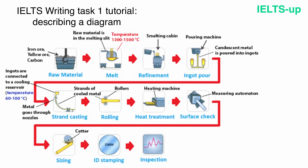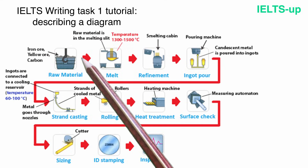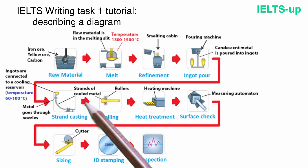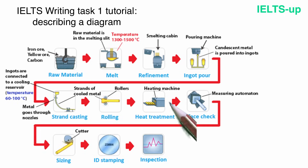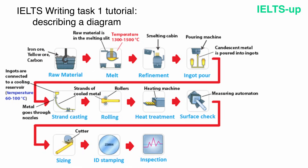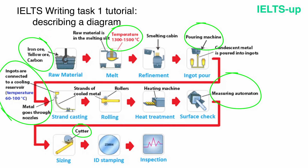Now let's examine our diagram. In this case it's a process diagram — it shows the process of manufacturing of metal rods. Each process consists of several stages. The first thing you need to do is to find the beginning and the end of the process. In our case we start from the raw material and end with inspection. You can see that this diagram has a lot of additional information provided for almost every stage, but we'll focus on it later.